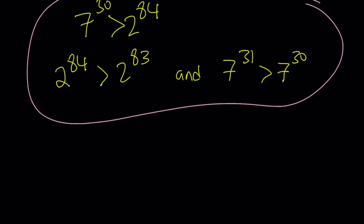From here, we can basically write a chain of inequalities. 7 to the power of 31 seems to be the largest one, so I'm going to start off with that one. 7 to the power of 31 is greater than 7 to the power of 30, which is greater than 2 to the power of 84, which is greater than 2 to the power of 83.